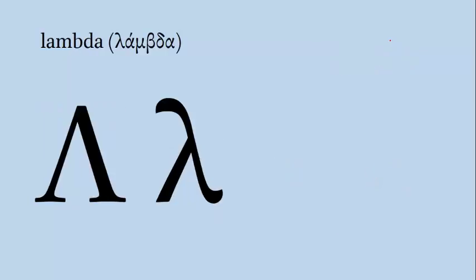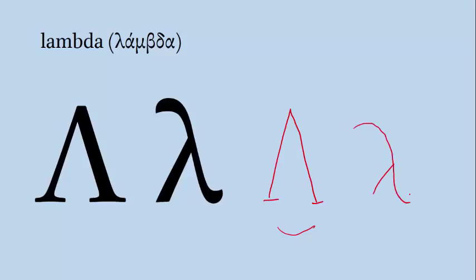Next up we have Lambda, which corresponds roughly to the English letter L as in 'land.' An uppercase Lambda looks like a big triangle without the bottom bar — don't close the bottom or it'll look like a Delta. For lowercase Lambda, I start with the shorter bar and then kind of cross it with the longer bar. An example of a Greek word with Lambda is the verb 'lambano,' which means 'I take, I seize.'